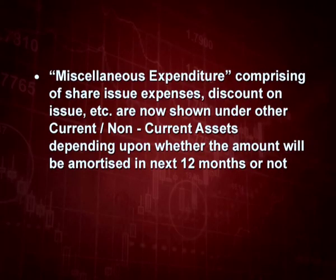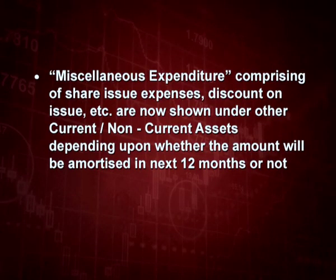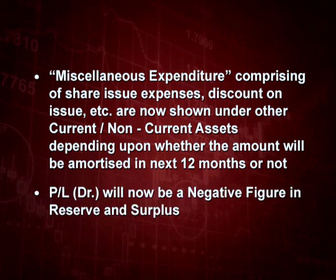Miscellaneous expenditure, which was previously shown on the asset side — comprising share issue expenses, discount on issue of shares, etc. — is now shown under other current or non-current assets, depending on whether the amount has to be amortized in the next 12 months or not. If it has to be amortized or written off in the next 12 months, it will be an other current asset. If amortized after 12 months, it will be a non-current asset. Profit and loss debit balance, which previously appeared on the asset side, will now be a negative figure in reserve and surplus. If reserve and surplus has no balance, a minus balance is shown; if it has a positive balance, the negative is adjusted against it.